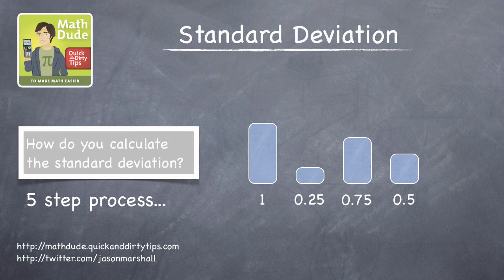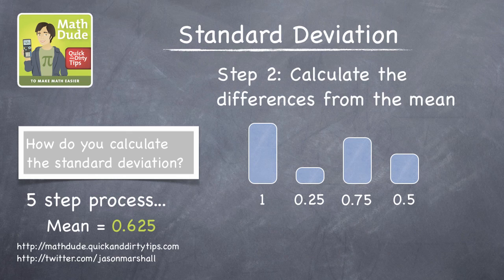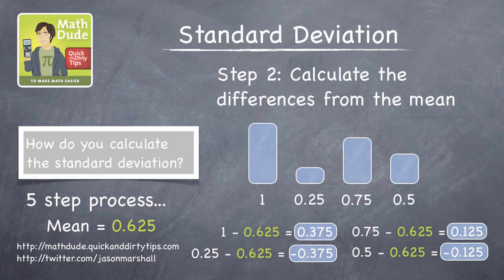Step two is to calculate the difference between the height of each glass of water and the mean height. These differences are 0.375, negative 0.375, 0.125, and negative 0.125.